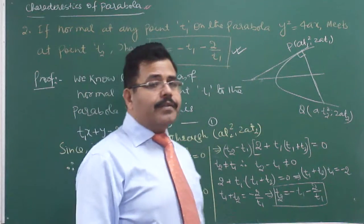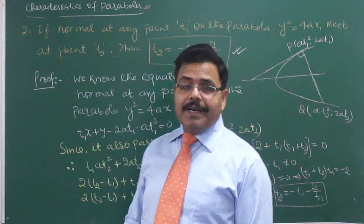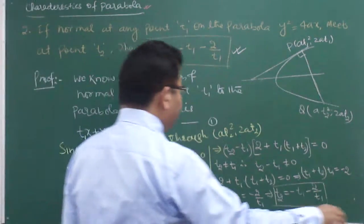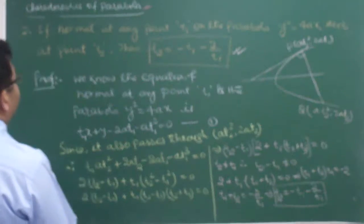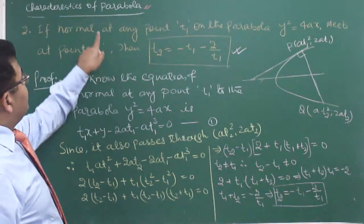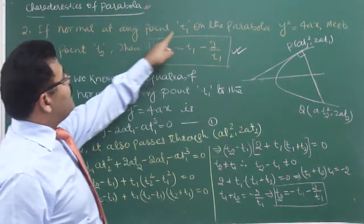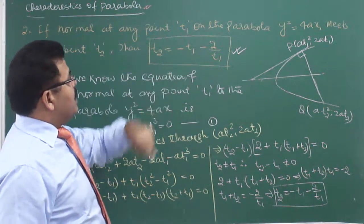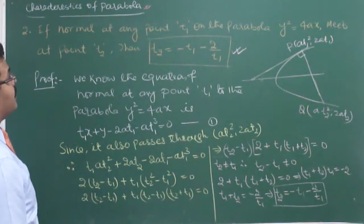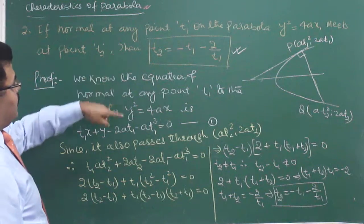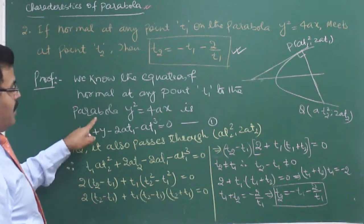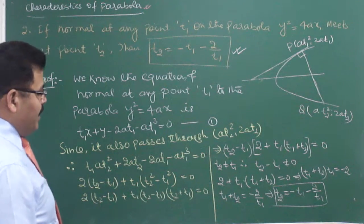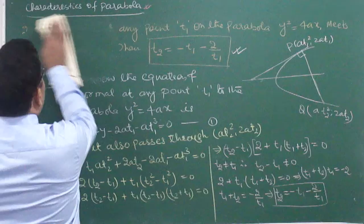You must remember this — it will be very useful. Questions can be asked directly or on the basis of this property. So if normal at any point T1 on the parabola y² = 4x meets the parabola again at T2, then T2 = -T1 - 2/T1.